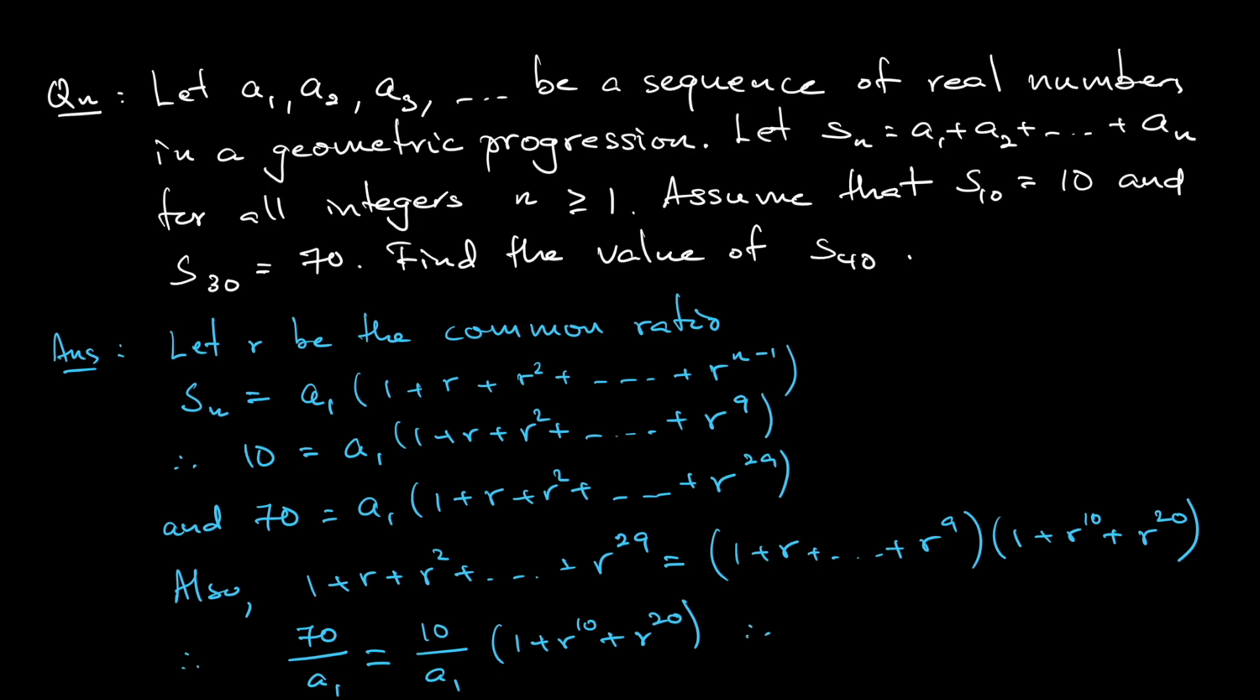Let's simplify this. I can cancel the a1 out. And then 70 and 10, it will be 7. So 7 equals 1 plus r to the power of 10 plus r to the power of 20. Shift the 7 to the other side, r to the power of 20 plus r to the power of 10 minus 6 equals 0.